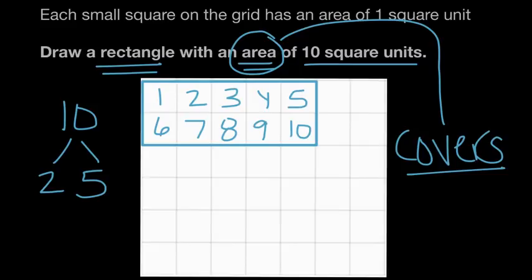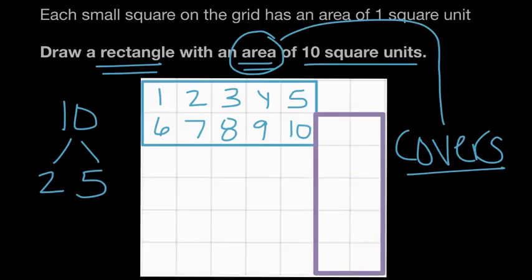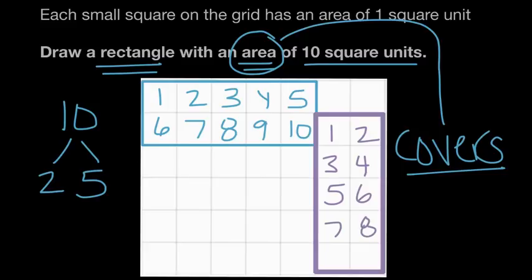Similarly, any rectangle covering five rows of two also works. Here's a rectangle — this one covers rows of two, and there are five rows, so counting: one, two, three, four, five, six, seven, eight, nine, ten. This rectangle covers 10 square units. So any rectangle you draw on the grid that covers either two rows of five square units or five rows of two square units is a rectangle with an area of 10 square units.